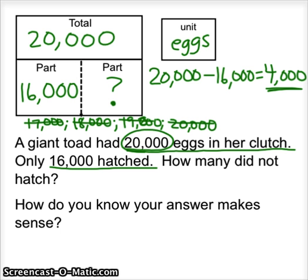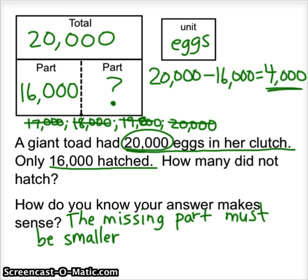The number that did not hatch is 4,000 eggs. How do we know our answer makes sense? Well, if there's 20,000 eggs total and 16,000 hatched, the number that did not hatch should be less than 20,000. It has to be less than the total for it to make sense. The missing part must be smaller than the total because we were subtracting to find the answer. If we would have added 20,000 and 16,000, we would have got 36,000, and it wouldn't make sense that 36,000 didn't hatch if there was only 20,000 total. A missing part has to be smaller than the total.